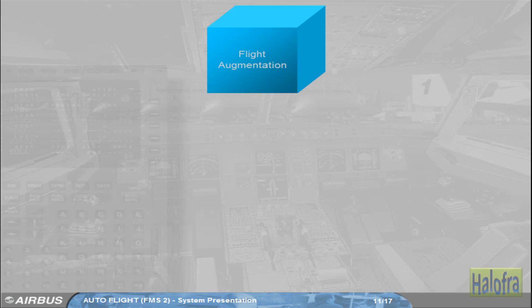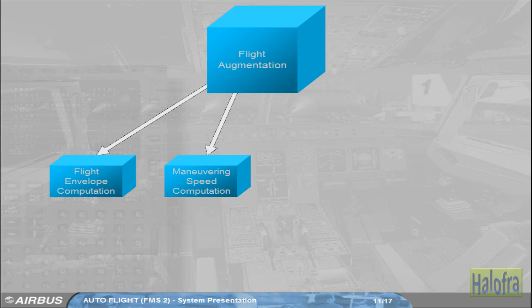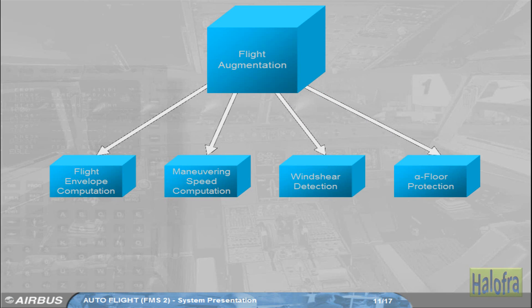The flight augmentation, FAC, part of the FMGS provides flight envelope computations such as minimum speed — VLS — or maximum speed — VMO or VFE. It also provides maneuvering speed computation, for example the best speed to fly in a given flap configuration. Wind shear detection triggers the wind shear warning. Angle of attack protection — alpha floor protection — is triggered when the aircraft angle of attack is above a predetermined threshold. Note: the FAC has various yaw functions such as yaw damping, turn coordination, and others which will be reviewed in the flight control chapter.